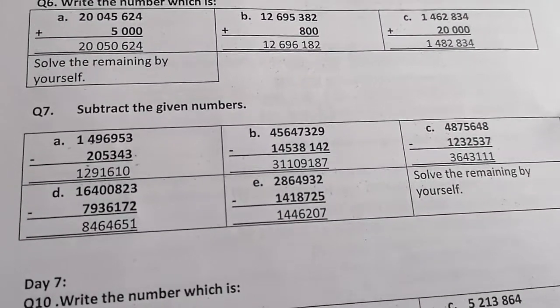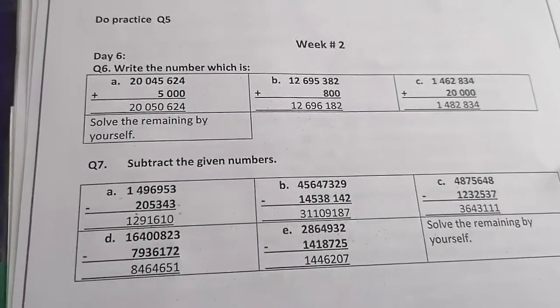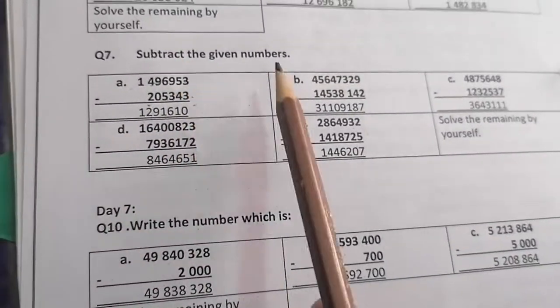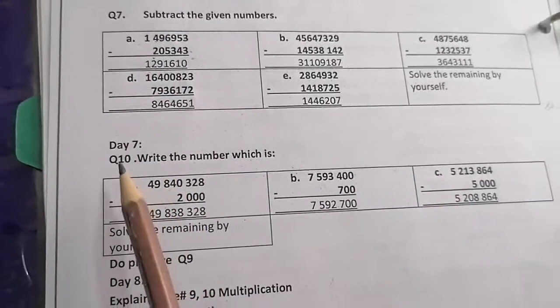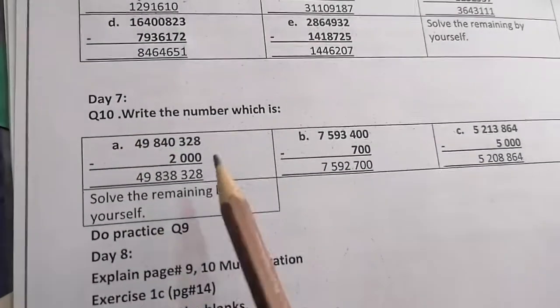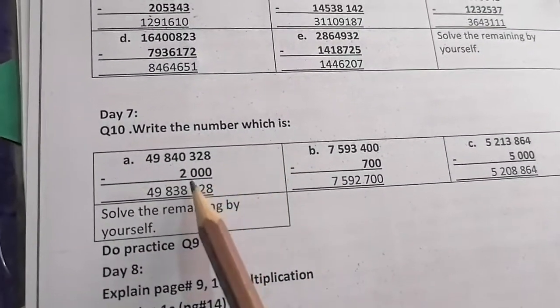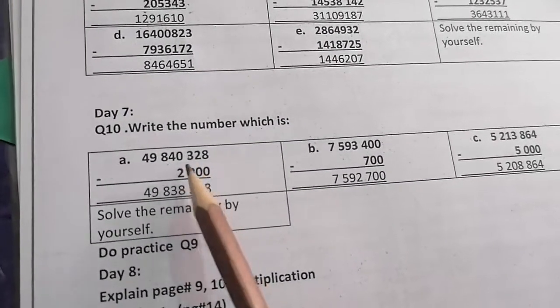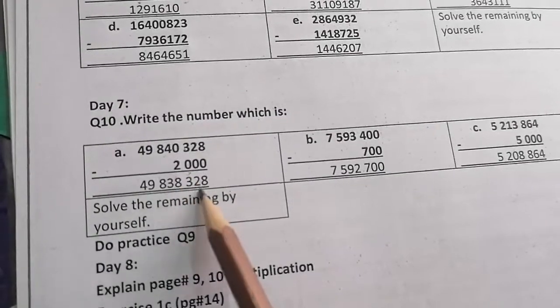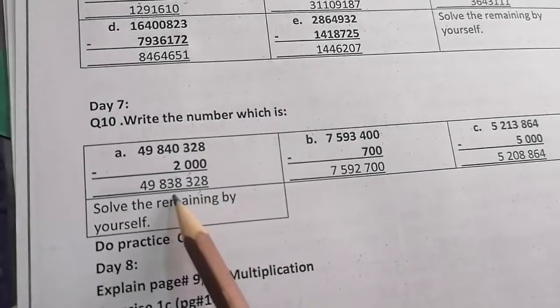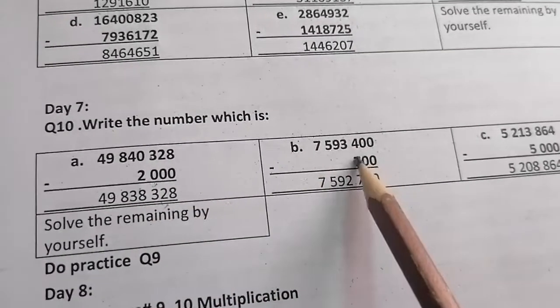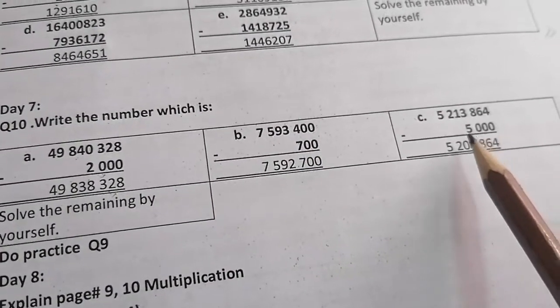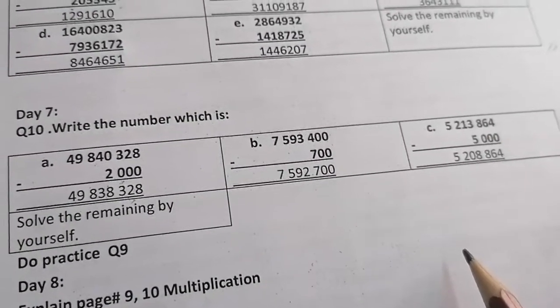Now, complete the rest of the remaining by yourself. They are very simple and very easy. Question number 7, subtract the given numbers. Question number 10, write the numbers which is, they have given the values. We have to subtract these fixed values from the numbers. Subtract 2,000 from this number. What will we get? We will get this value. 700 from this. 5,000 from this.